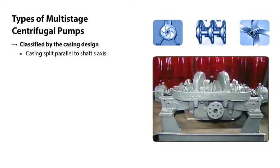For example, this pump's casing is split parallel to or along the shaft's axis. So this pump is said to be an axially split pump.